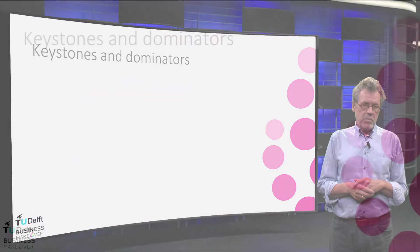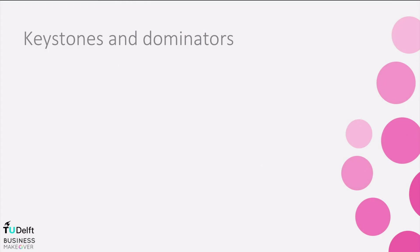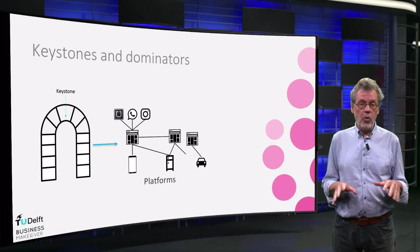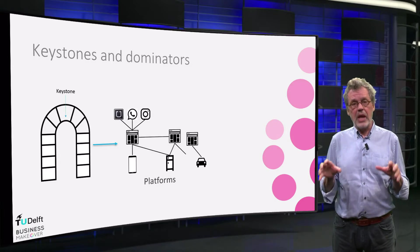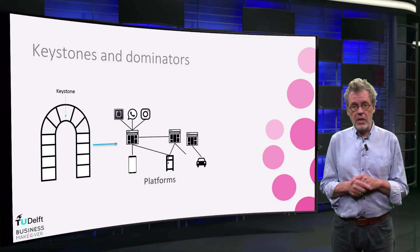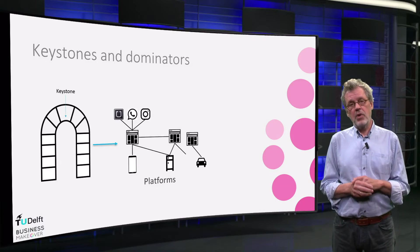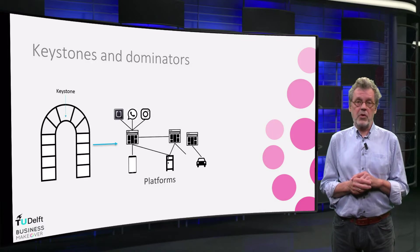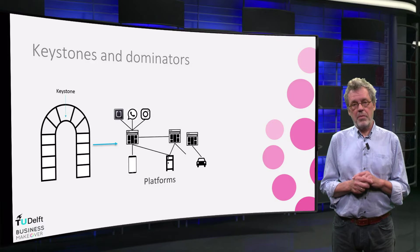In a platform ecosystem, the organisation that provides the platform is the central actor. However, the way this can be done and how value is created and captured and for whom is different. Keystone players focus on creating and capturing value from the platform for all tier 1 actors. They are called keystones, similar to the stones in an arch that if taken out will lead to the collapse of the arch. Examples of keystone players are for instance Plantui in Finland or Idink in the Netherlands, and you can read about their cases on businessmakeover.eu.